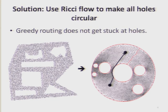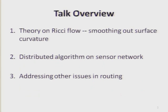What I'm going to tell you is how to change the shape of the network so that all the holes are circular, and greedy routing will always deliver a message. For this, I will introduce the mathematical theory on VC flow. VC flow is a procedure to deform a shape such that the curvatures on the surfaces are smoothed out.